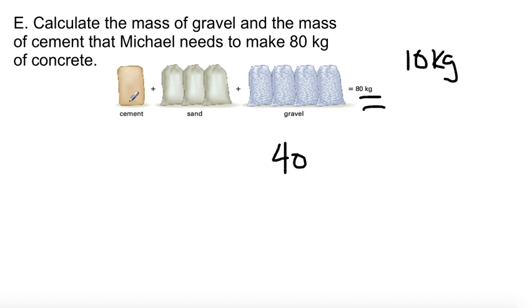And how many kilograms of cement? 10. So here is your ratio in kilograms of cement to gravel. Alright. So that's it. We are done.